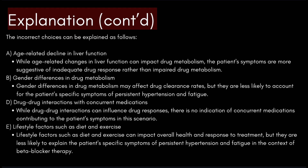Let's see why the incorrect choices are wrong. Age-related decline in liver function: while age-related changes can impact drug metabolism, the patient's symptoms are more suggestive of inadequate drug response rather than impaired metabolism. Gender differences in drug metabolism: these may affect drug clearance rates but are less likely to account for the patient's specific symptoms. Drug-drug interactions with concurrent medications: there is no indication of concurrent medications contributing to the symptoms. Lifestyle factors such as diet and exercise: less likely to explain the patient's specific symptoms in the context of beta blocker therapy.